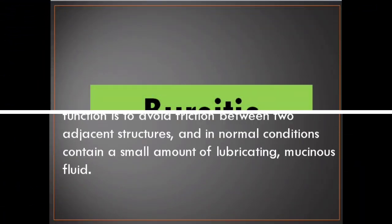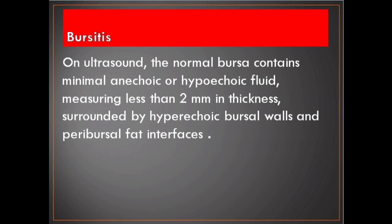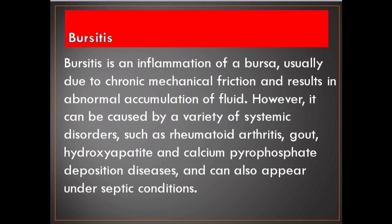Bursitis. Bursae are small fluid-filled sacs lined by synovial membrane, found in anatomically predisposed locations. Their function is to avoid friction between two adjacent structures, and in normal conditions they contain a small amount of lubricating mucinous fluid. On ultrasound, the normal bursa contains minimal anechoic or hypoechoic fluid measuring less than 2 mm in thickness, surrounded by hyperechoic bursal walls and parabursal fat interfaces. Bursitis is an inflammation of a bursa, usually due to chronic mechanical friction, and can be caused by systemic disorders such as rheumatoid arthritis, gout, hydroxyapatite and calcium pyrophosphate deposition diseases, or under septic conditions.